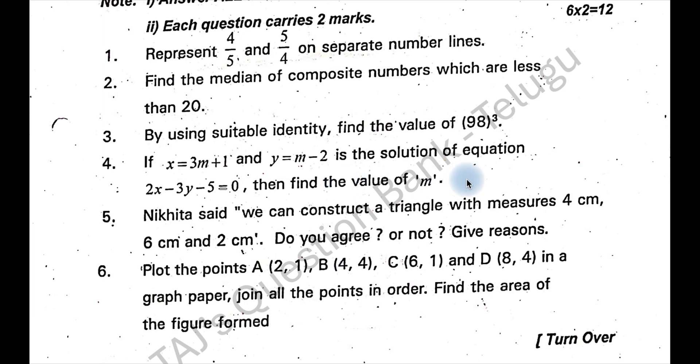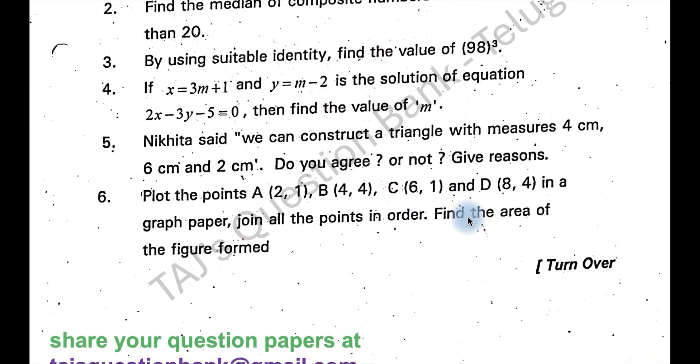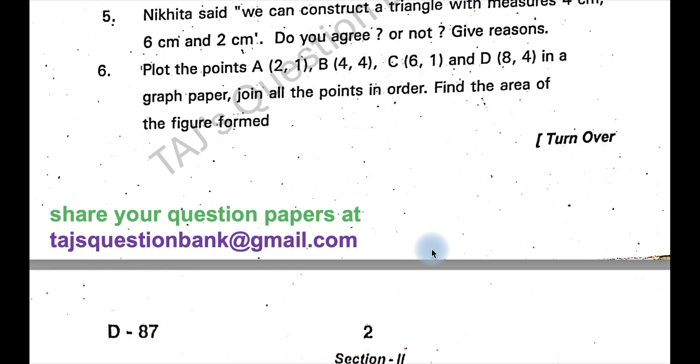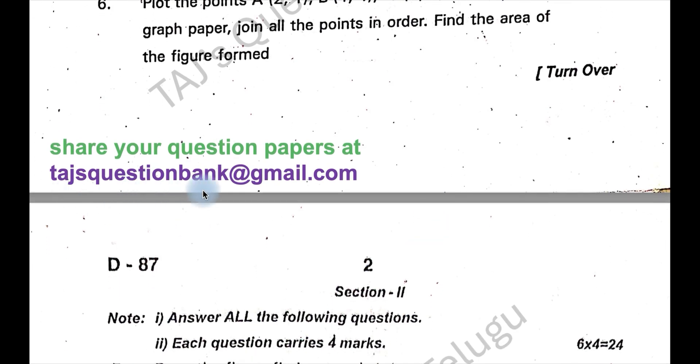For this the answer will be m is equal to minus 1. For question number 5 it is not possible because sum of two sides is equal to the length of the third side. It doesn't make a triangle. If you also have a question paper please share it at the mail ID thoughtsquestionbank@gmail.com along with your name and place.